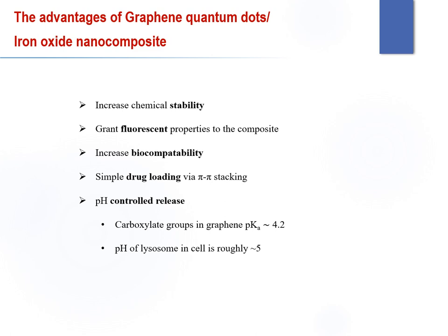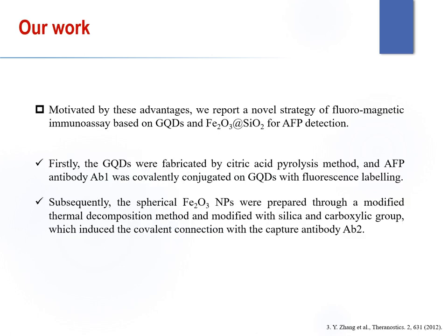Moreover, the combination of graphene quantum dots and iron oxide nanoparticles presents unique advantages, including increased chemical stability, granted fluorescent properties to the composite, increased biocompatibility, simple drug loading via pi-pi stacking, and pH-controlled release. The pKa of the carboxylate group in graphene is 4.2, and the pH of lysosomes in cells is nearly 5, which are very close. Motivated by these advantages, we report a novel strategy of fluoromagnetic immunoassay based on GQDs and iron oxide silica nanoparticles for AFP detection.